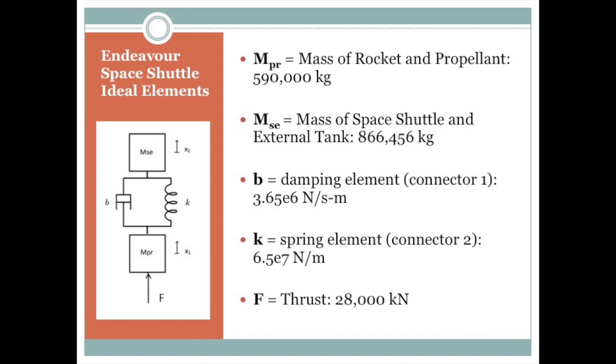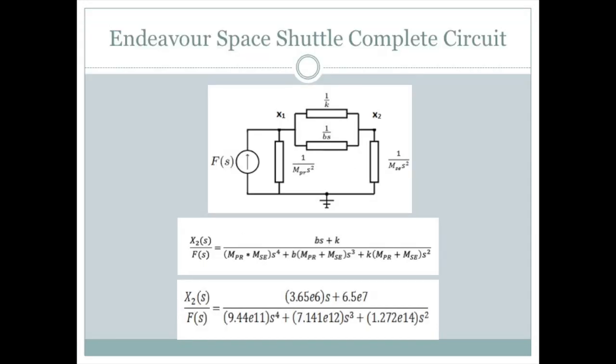Finally, our force through is the thrust, which is 28,000 kilonewtons. From our Space Shuttle ideal element model on the previous slide, we can get our complete circuit, which is shown here, and we have our transfer function listed in terms of variables and with our coefficient values plugged in as well.